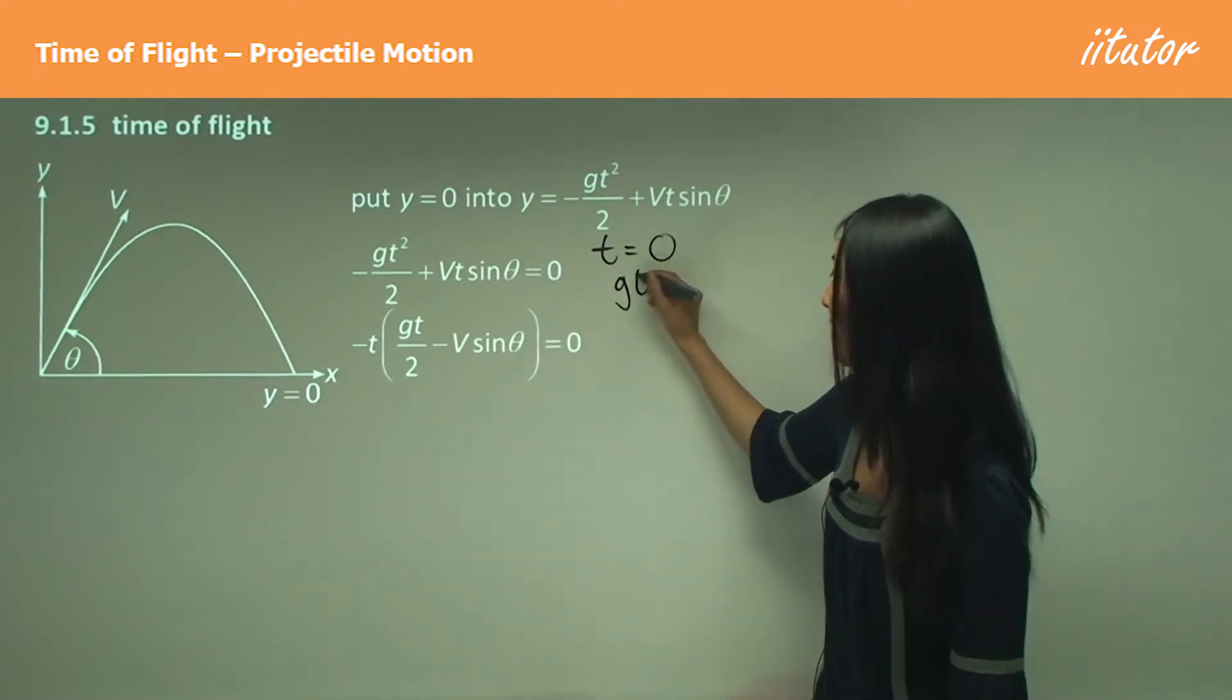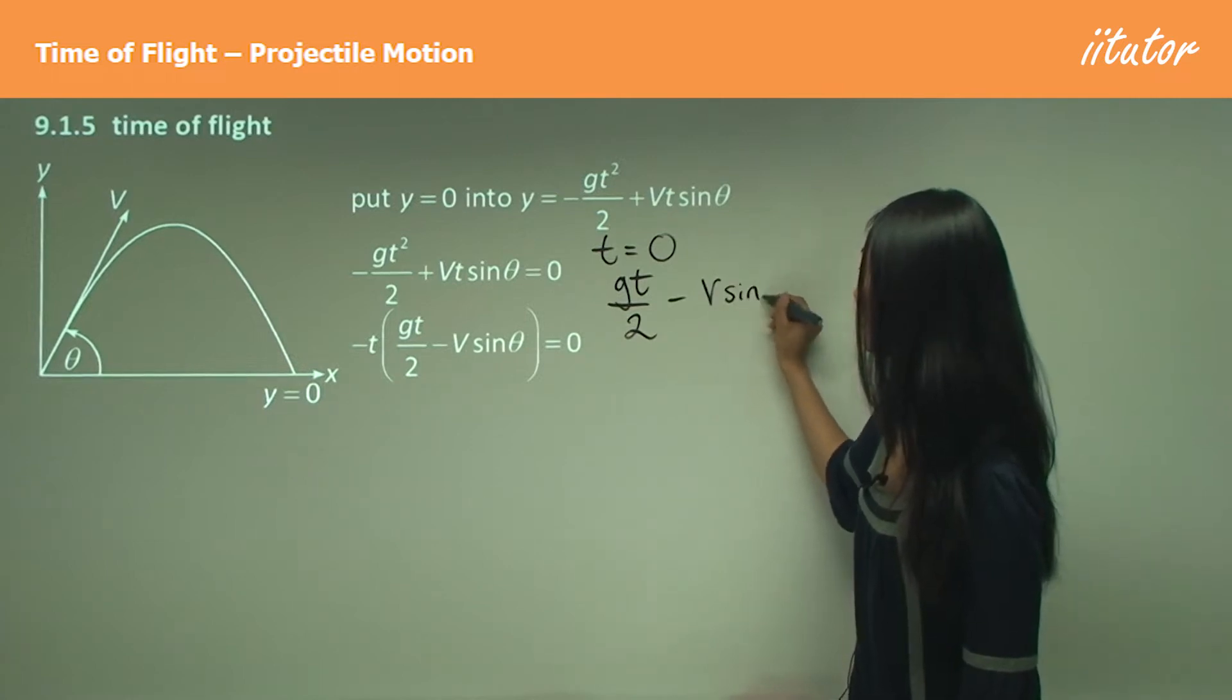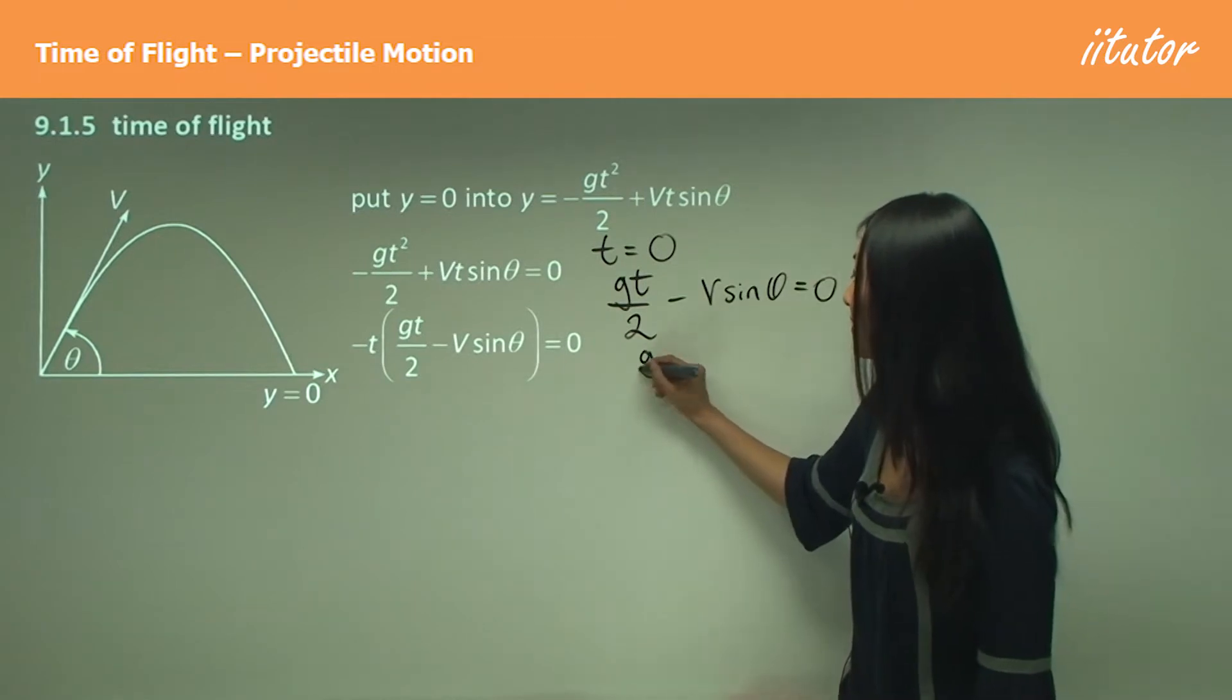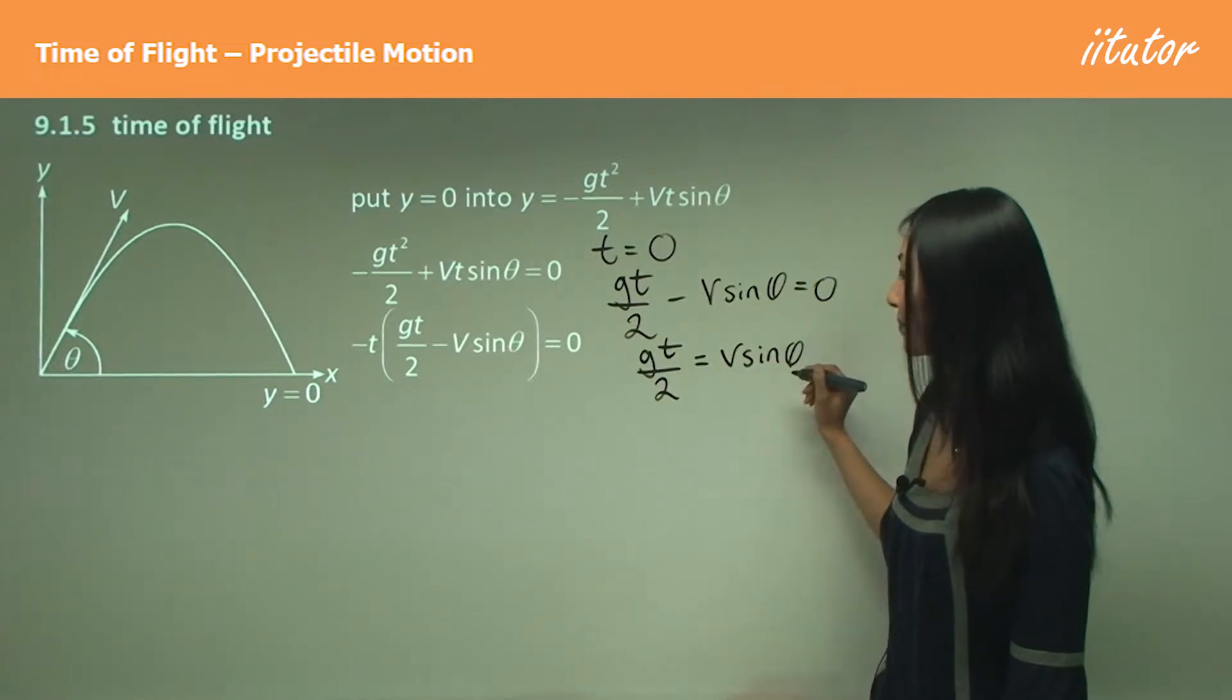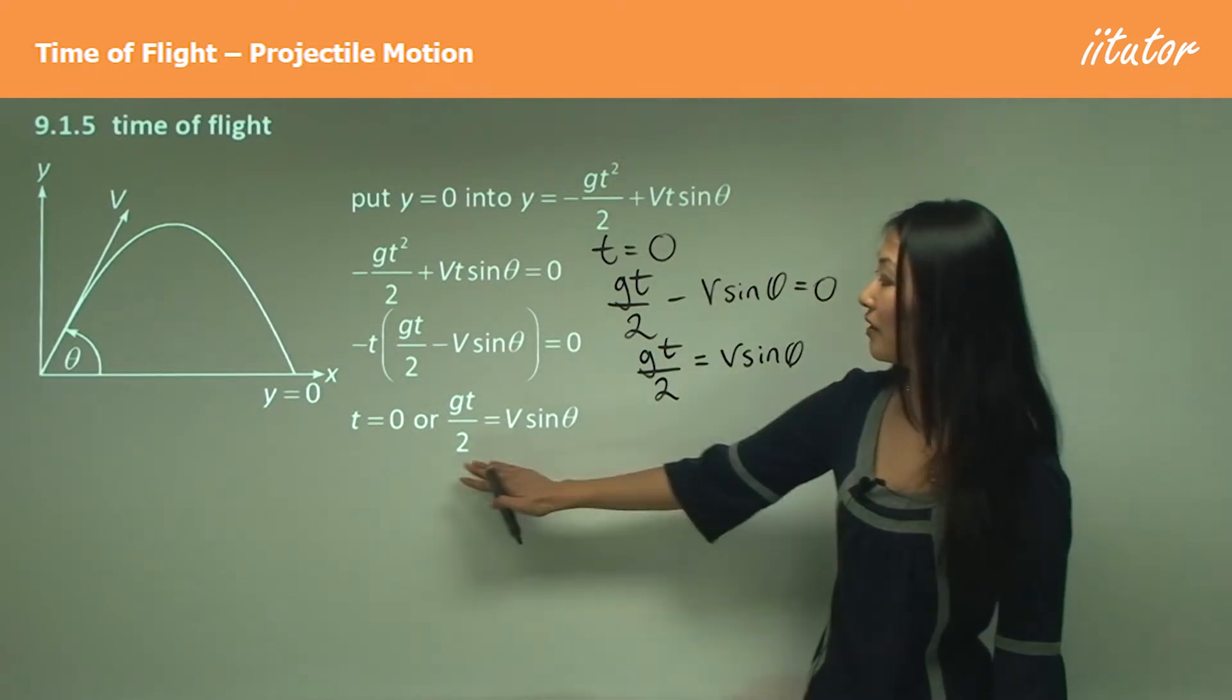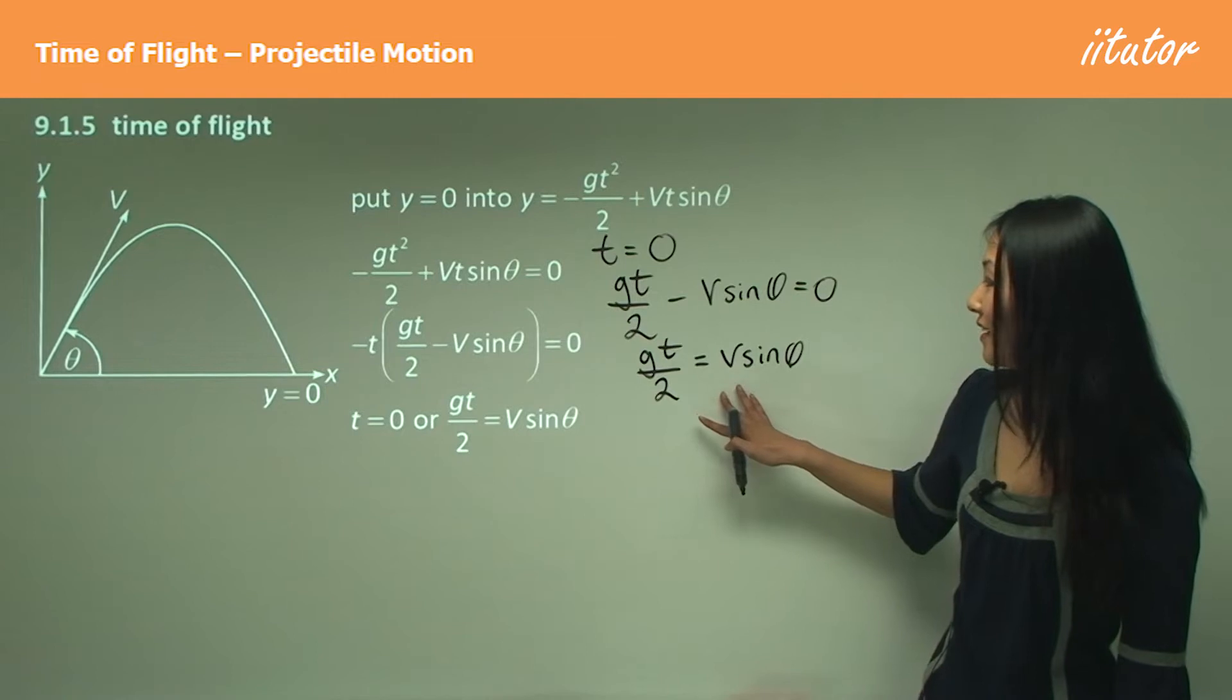So gt/2 minus v·sin(θ) equals zero. Moving that to the other side, gt/2, we can say that equals v·sin(θ).